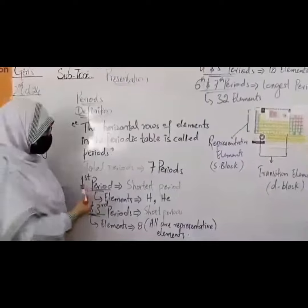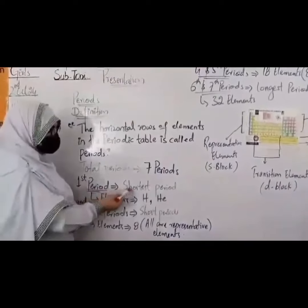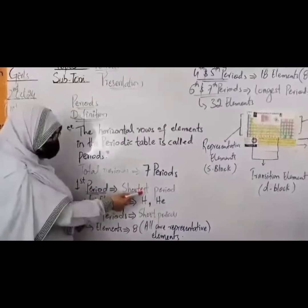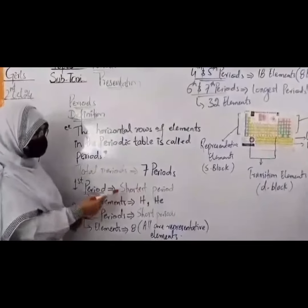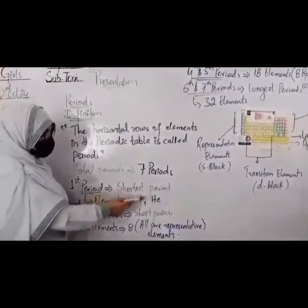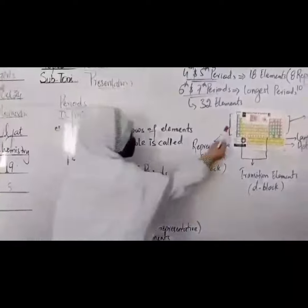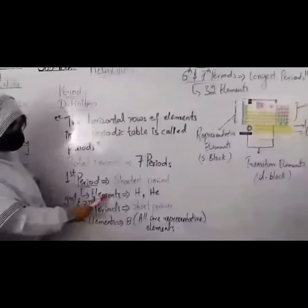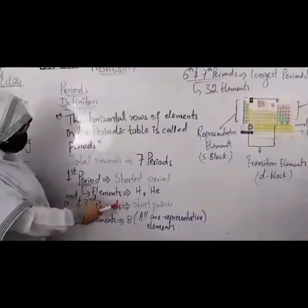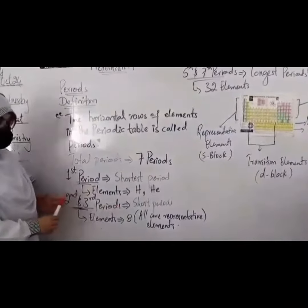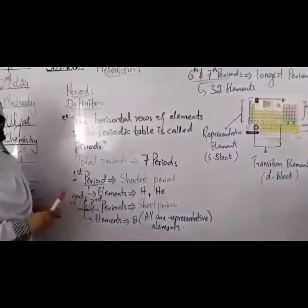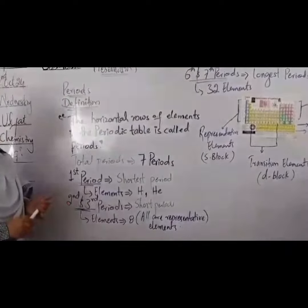The first period is a short period. It contains two elements: hydrogen and helium. The second and third periods are also short periods; they contain eight elements each. All are representative elements.